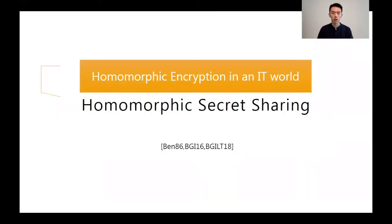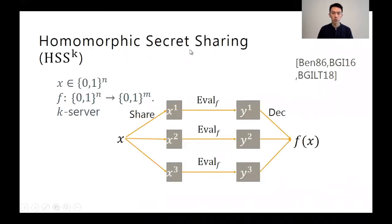Homomorphic secret sharing is an information theoretic analogue of homomorphic encryption, and it has many use cases, including delegating computation and local communication MPC. The basic setting of HSS consists of a single client and k servers, where the client holds a secret input to a function f. But perhaps the function is too complicated for the client to compute on its own, so it decides to apply a secret sharing that splits it into k parts and have the servers compute instead.